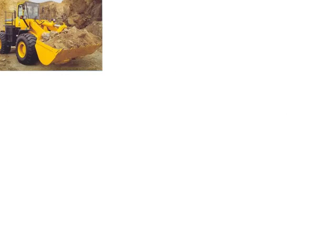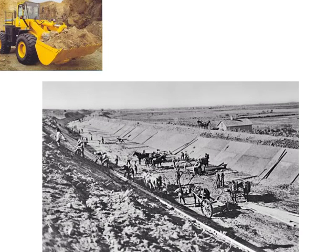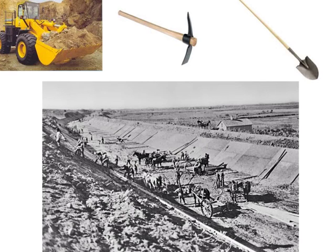When we think of modern construction, we think of using machines like a front-end loader. But here's a picture of the building of the Erie Canal — all these workers used was nothing more than picks, shovels, and manpower.